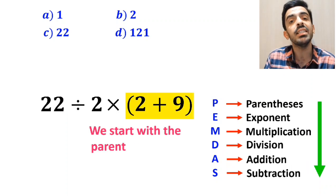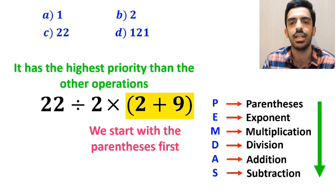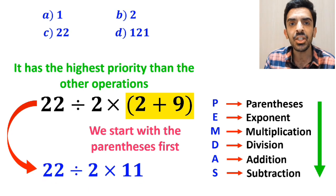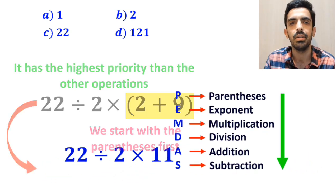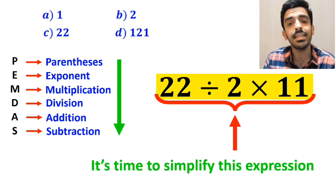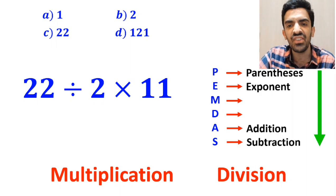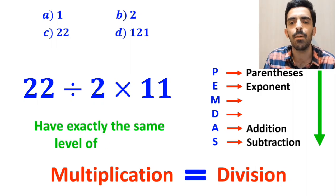So we'll start with the parenthesis first, because it has the highest priority than the other operations. Okay, this expression simplifies to 22 divided by 2 then times 11. Now it's time to simplify this expression. It's very important to note that in the PEMDAS rule, multiplication and division have exactly the same level of priority.